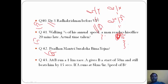A and B run a 1 kilometer race. A gives B a start of 50 meters and still beats him by 15 seconds. If A runs at a speed of 8 kilometers per hour, the answer here is D, that is 7.4. How? Let's see.